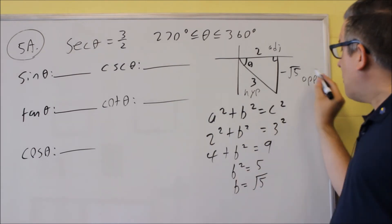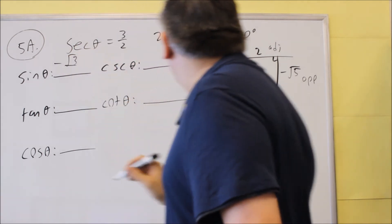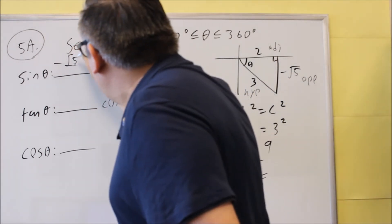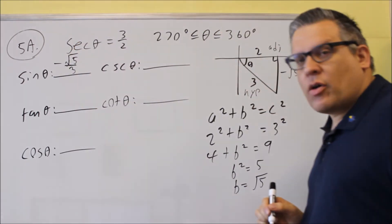Sine is opposite over hypotenuse. So that would be negative square root of three, or negative square root of five, rather, over three. Okay, so that would be that one.